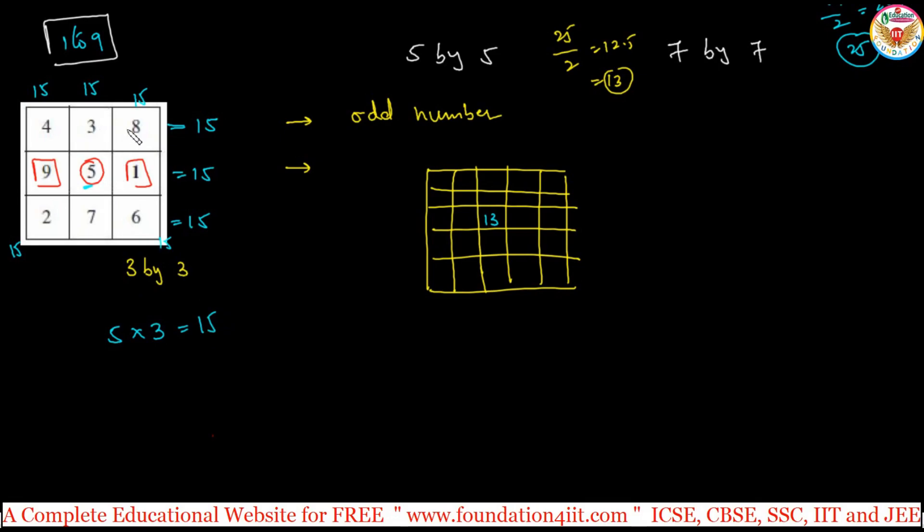Sum of the numbers in every row and every column should be 15. If you prepare 5 by 5, 5 rows, 5 columns, 13 is the center number into 5, it should be 65. If you add every row, every column, its sum should be 65.